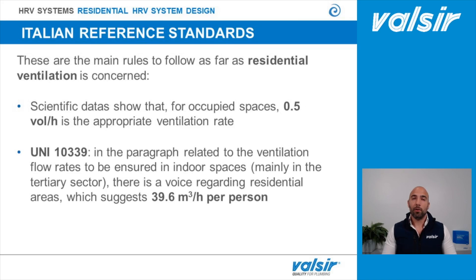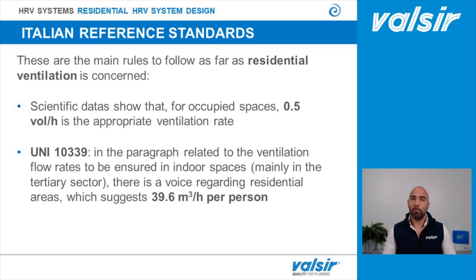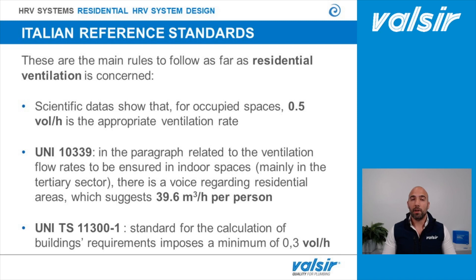The Italian UNI 10339, for example, tells us that it has to be ensured an air exchange value of 39.6 cubic meters per hour per person. If we use this regulation or the 0.5 ratio on a 4-person family living in a 100 square meter flat with an average ceiling height of 3 meters, the results are pretty close to one another. Moreover, the UNI TS 11300 part 1 gives us a lower air exchange ratio of 0.3 volume per hour.